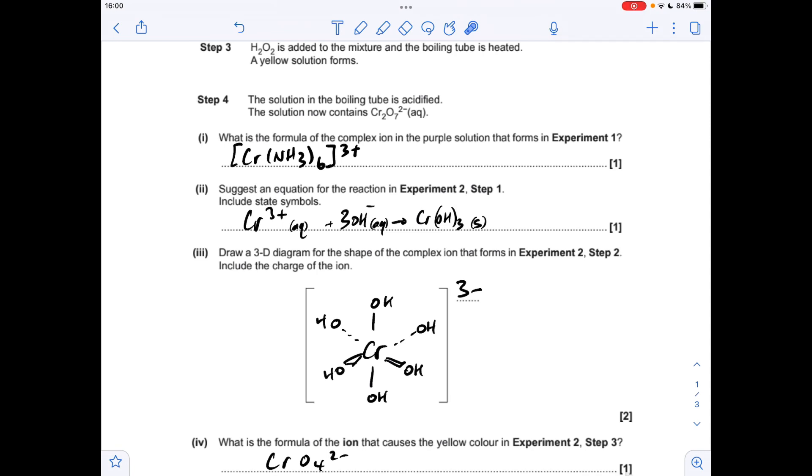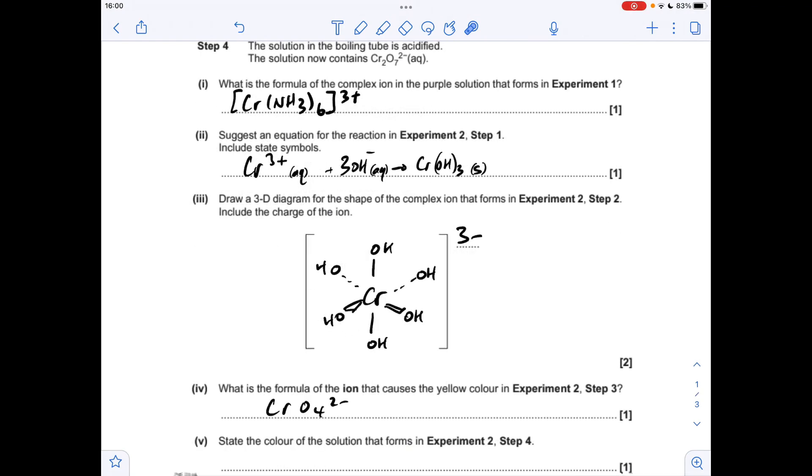Moving on to part 4, so the ion that causes the yellow color is CrO4 2-. And for the final part of here, we're told that when the boiling tube is acidified in Step 4, it contains the Cr2O7 2- ion. This is the dichromate 6 ion, which is orange.